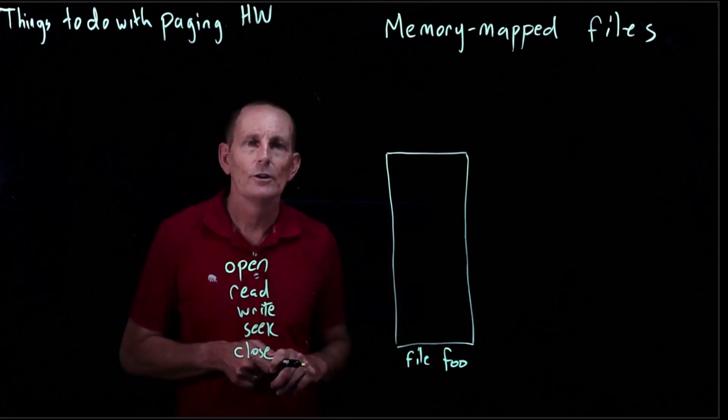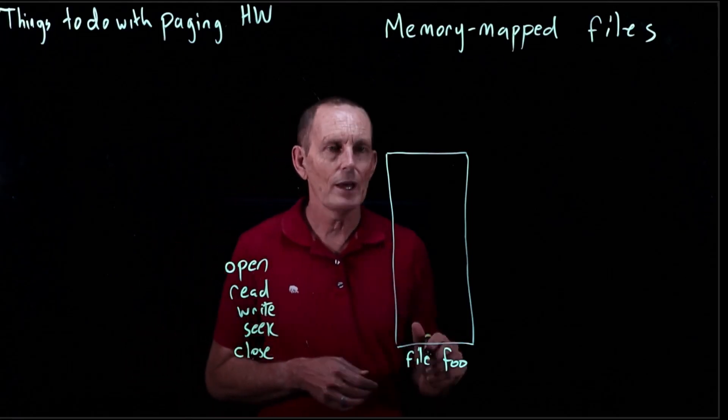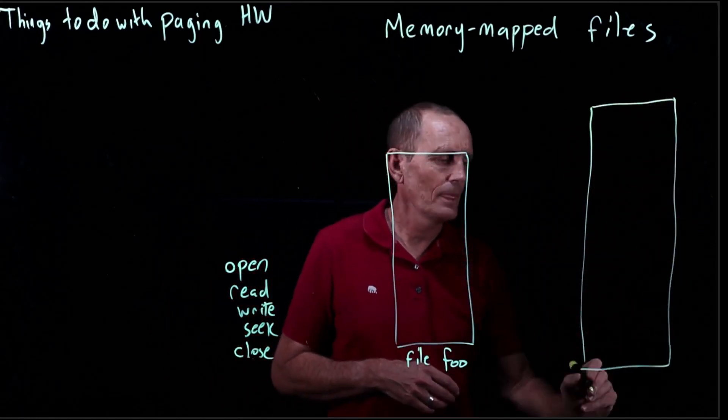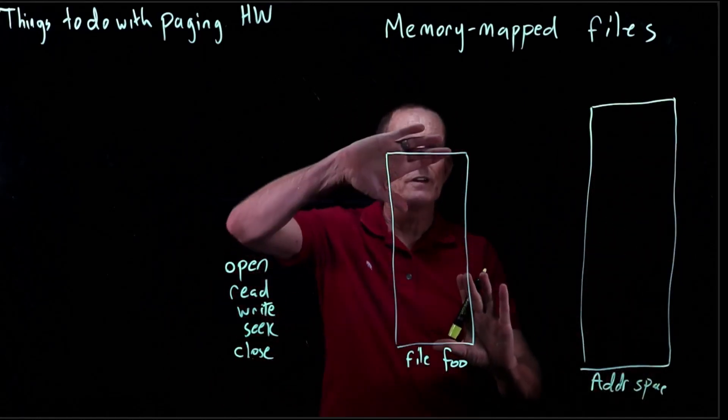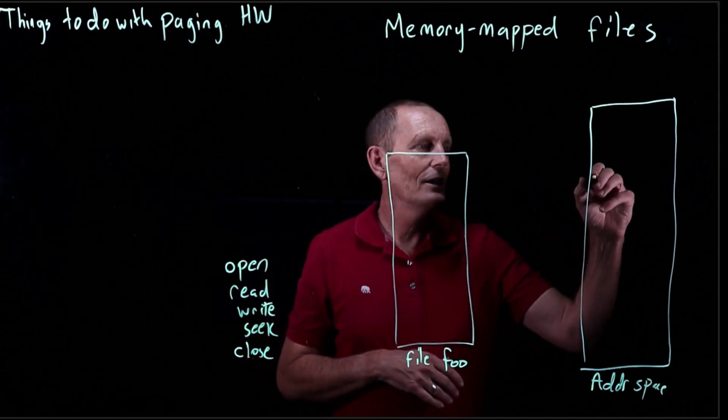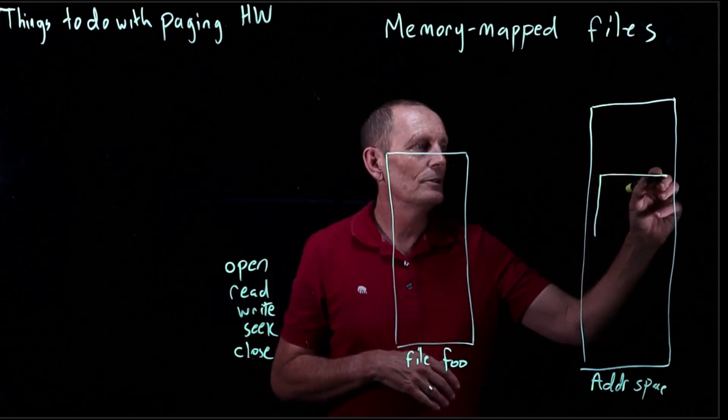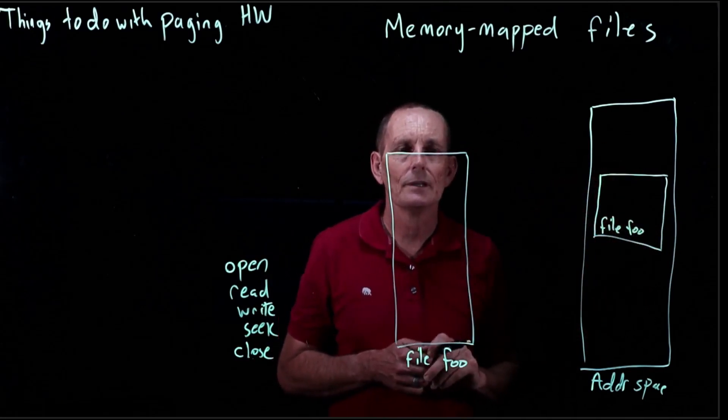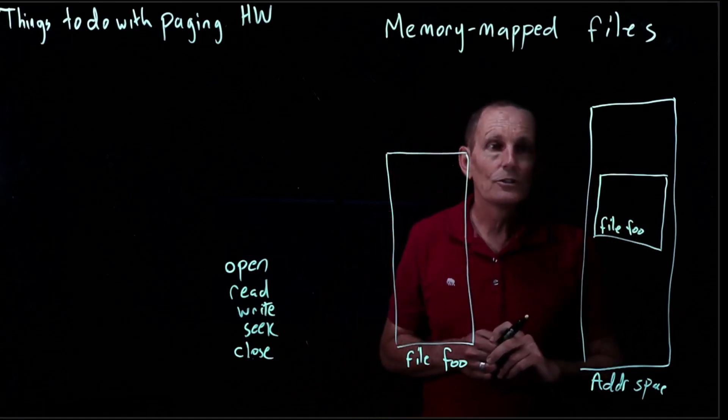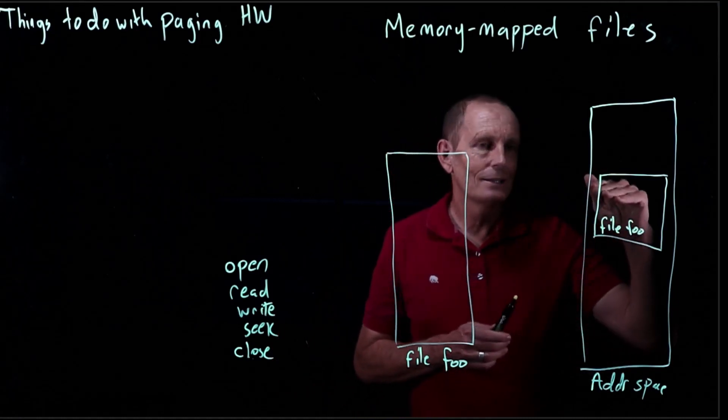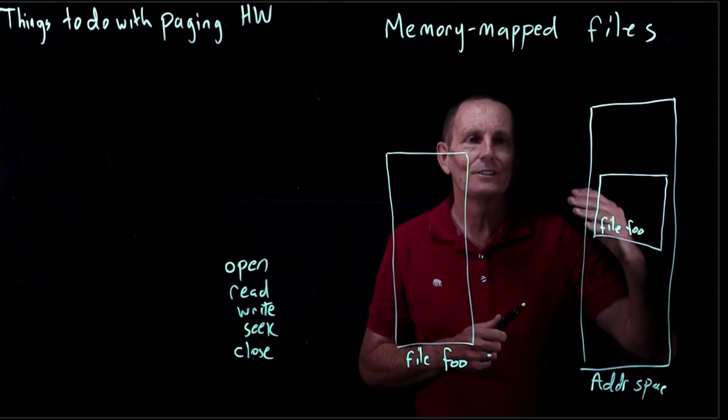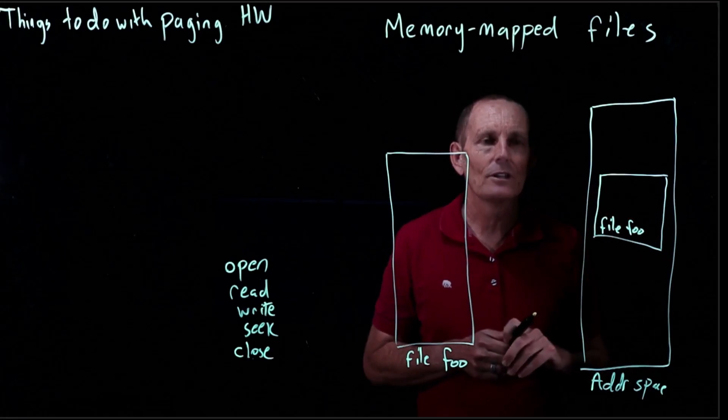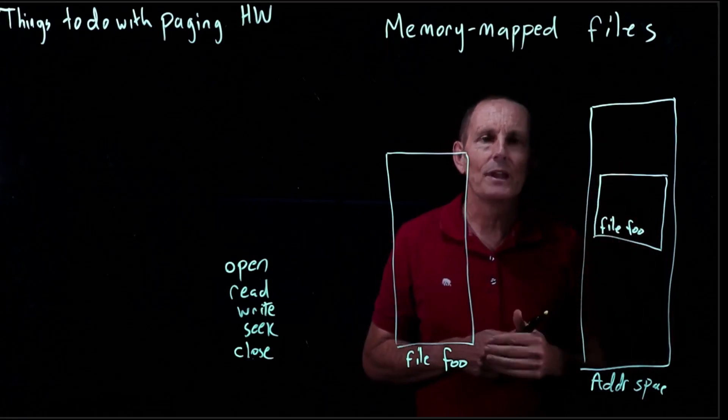An alternative would be to say, hey kernel, can you go ahead and load this file into my address space? So that the file foo will look as though it's just part of my memory. And I can just, in order to read, go to the address that I want to read from and use memory operations. If I want to write, I just assign to the memory location. If I want to seek, I just move a pointer up and down.